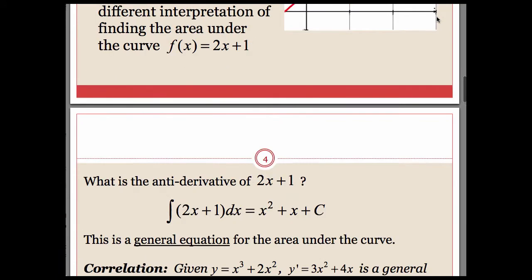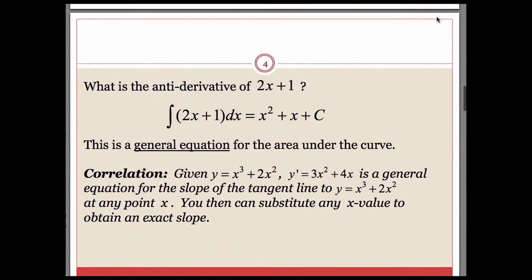If you calculate the antiderivative of 2x plus 1, you hopefully got x squared plus x plus c. We referred to that as a general solution. It represents a general equation for the area under the curve.